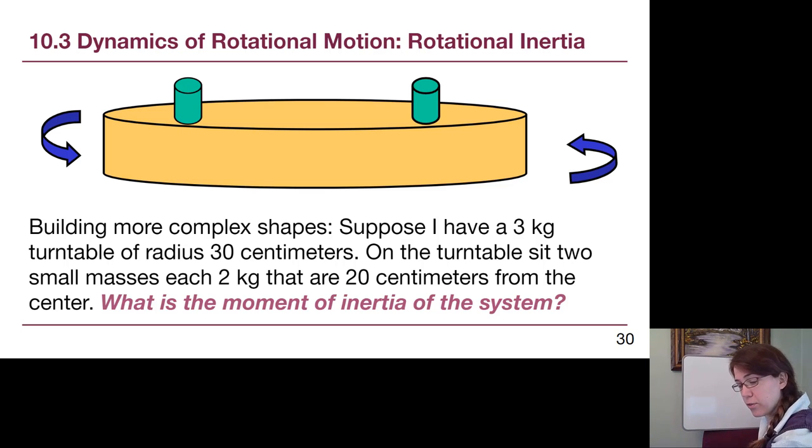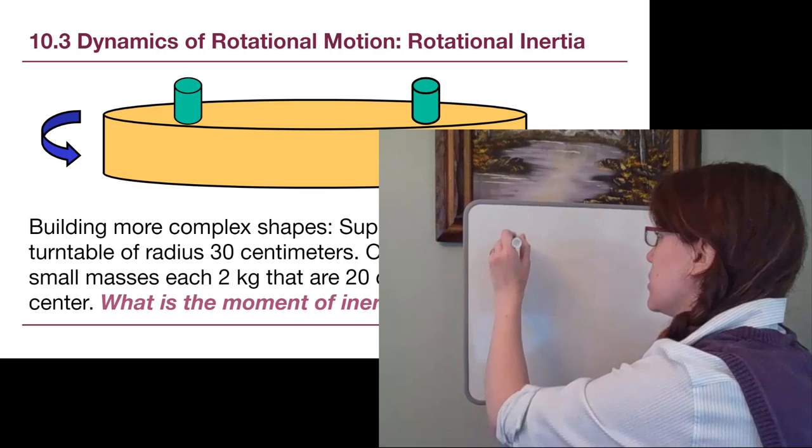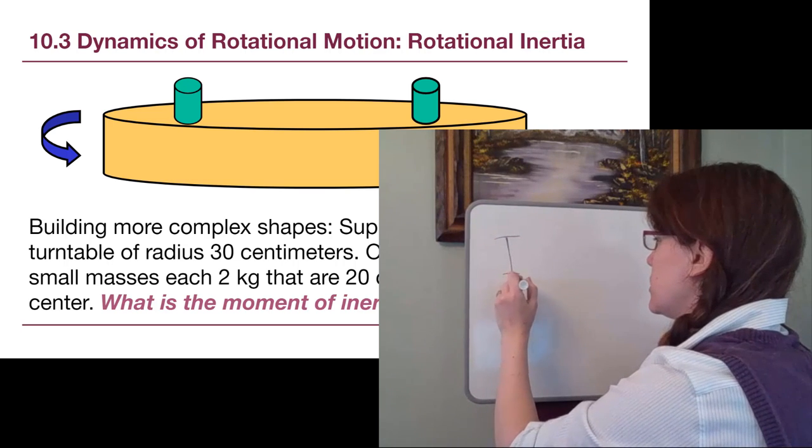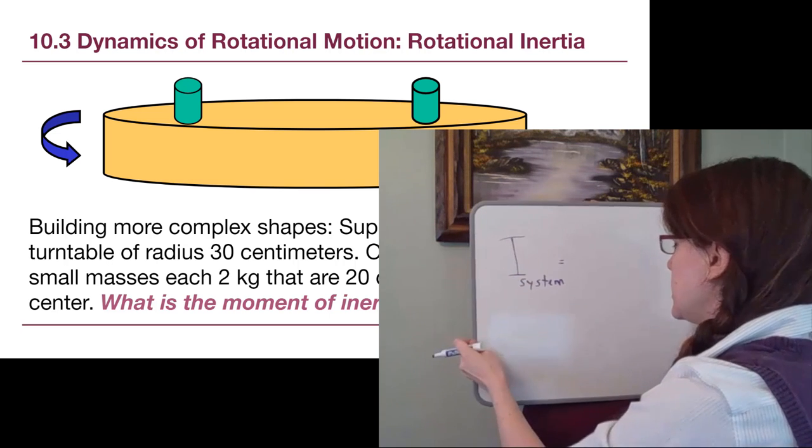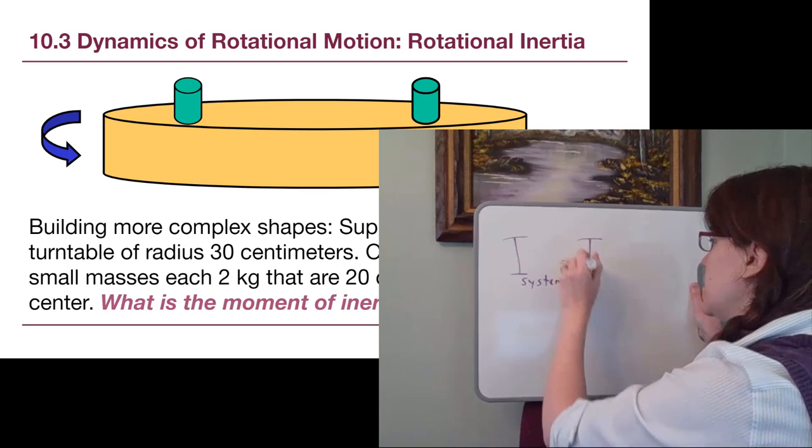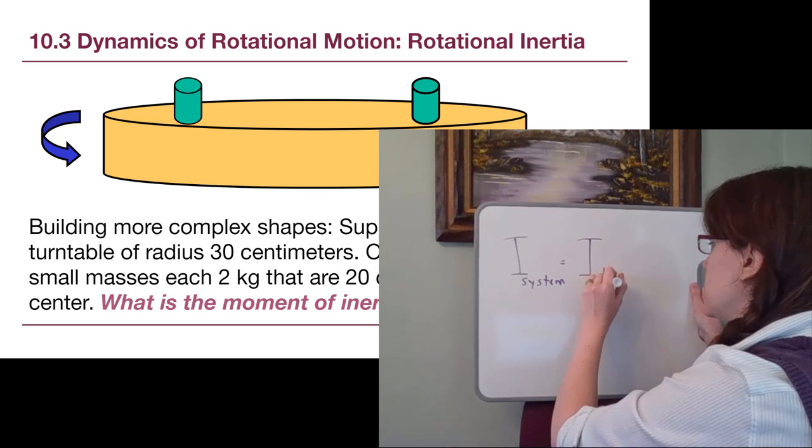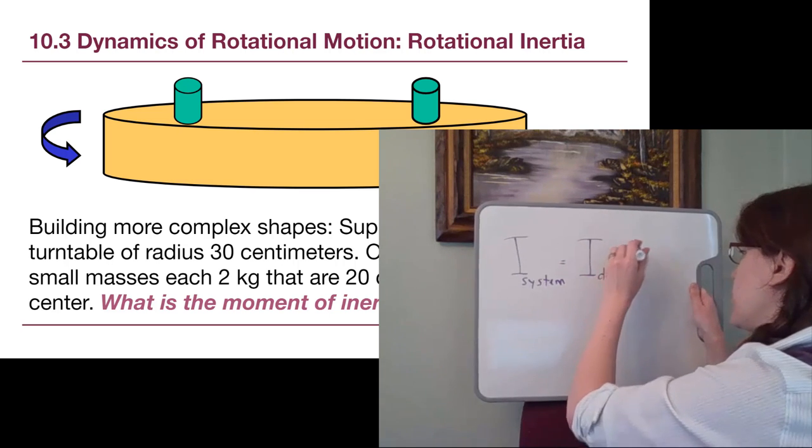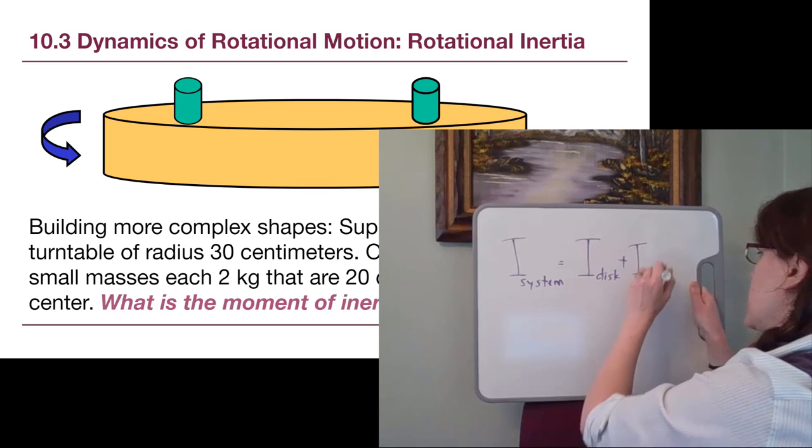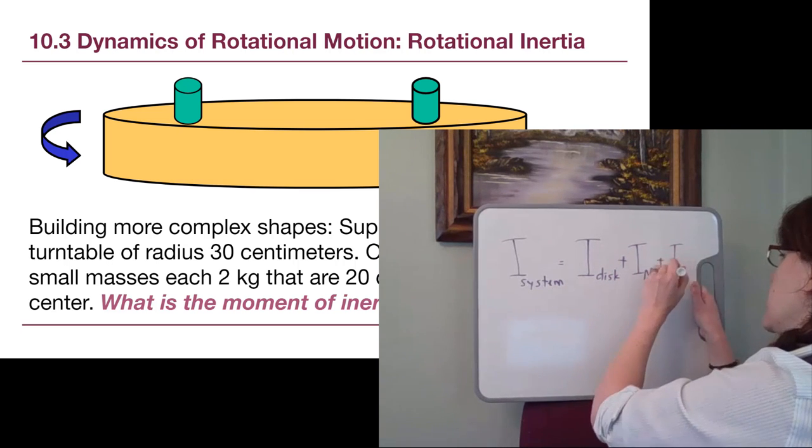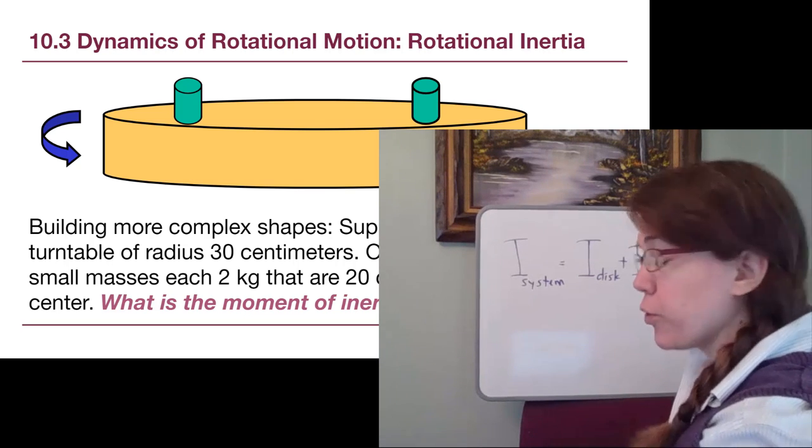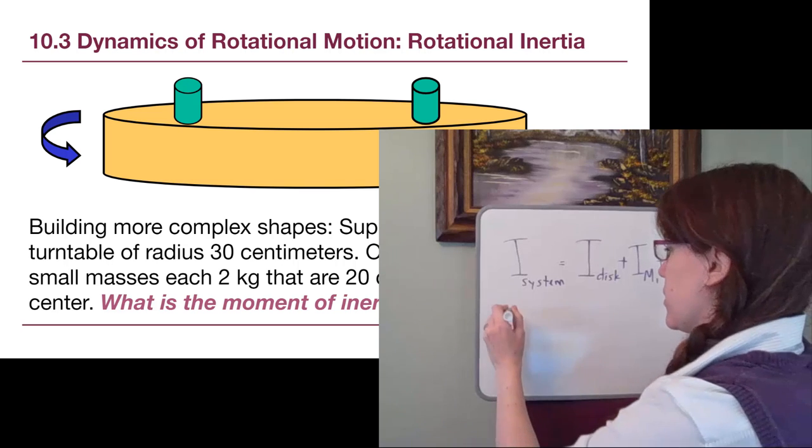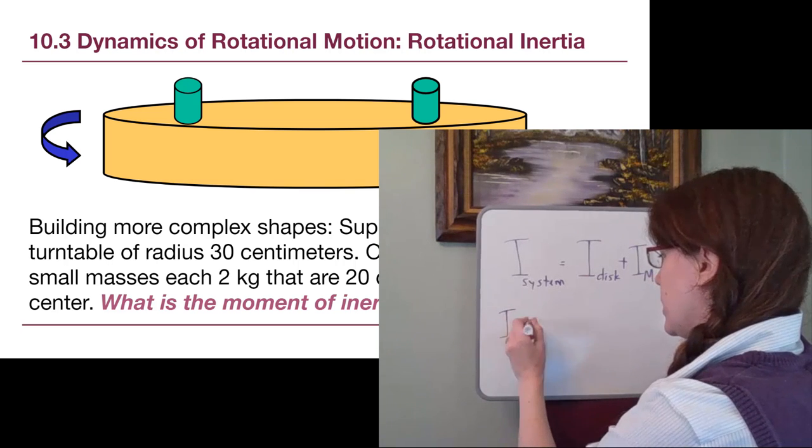So for this problem then, what we have is that the full moment of inertia, so the moment of inertia of the system is equal to the moment of inertia of the disk, plus the moment of inertia of mass one, plus the moment of inertia of mass two. Okay, so for this system then, so the full moment of inertia.